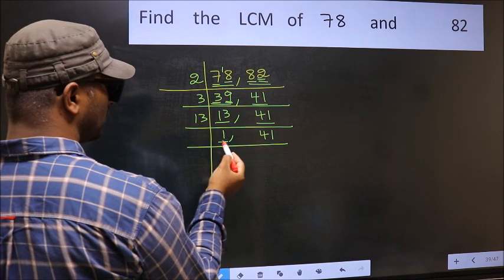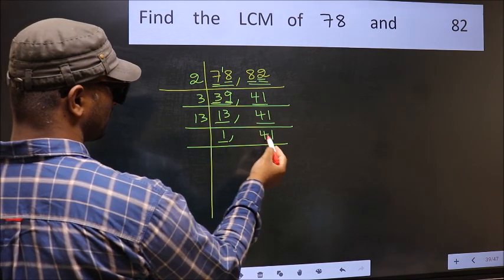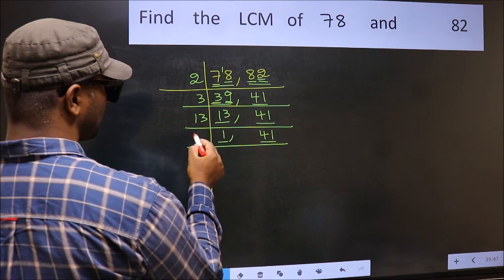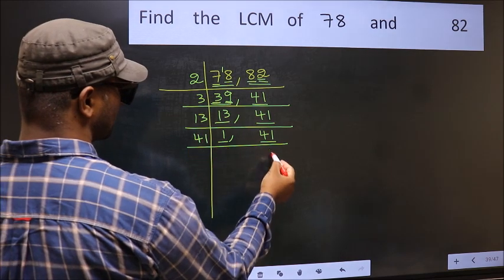Now, we got 1 here. So, focus on the next number, 41. 41 is a prime number, so 41 ones, 41.